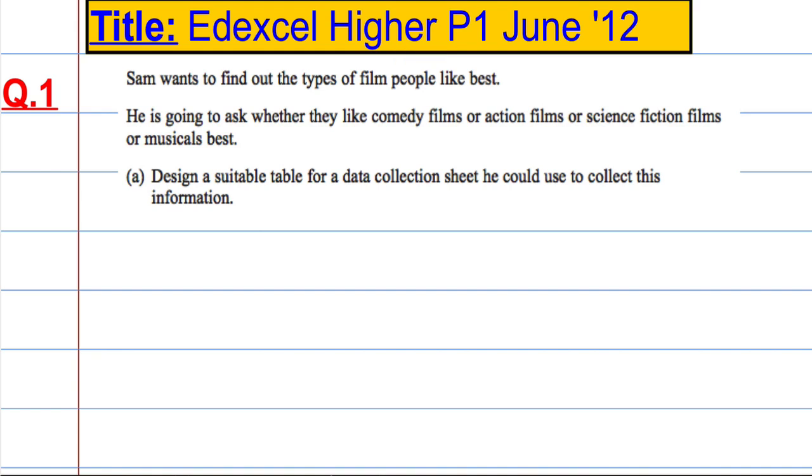So here we go with question 1 from the Edexcel Higher paper 1 from June 2012. Sam wants to find out the types of film people like best and he's going to ask whether they like comedy, action, science fiction or musicals best.